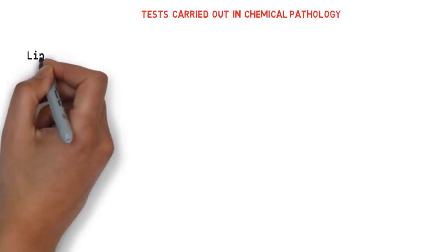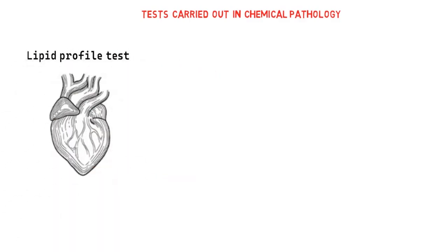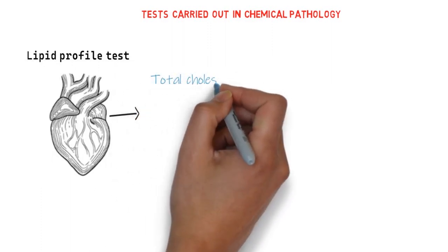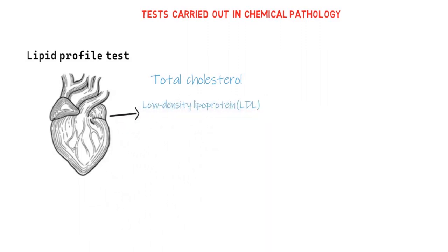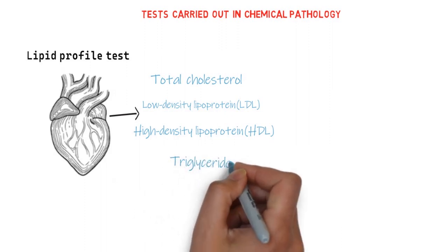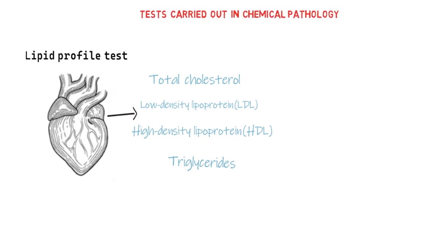Another test carried out in a chemical pathology lab is the lipid profile test. The lipid profile test tells the state of our cardiovascular health. In this test, we check for total cholesterol, low-density lipoprotein, high-density lipoprotein, and triglycerides. The lipid profile tests are often recommended for routine health checkups. These are just some of the tests carried out in a chemical pathology lab.